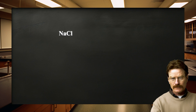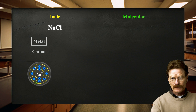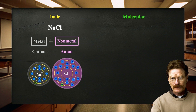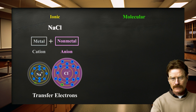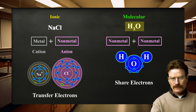We can often tell whether a compound is ionic, consisting of ions, or molecular, consisting of molecules, from its composition. In general, cations are metal ions and anions are nonmetal ions. Consequently, ionic compounds are generally combinations of metals and nonmetals, as in NaCl. In contrast, molecular compounds are generally composed of nonmetals only, as in H2O.